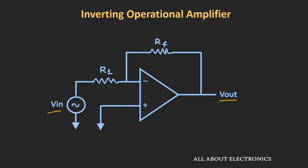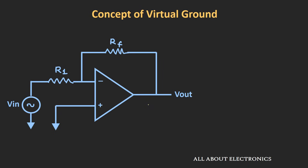Let us find how we can control the gain of the op-amp using feedback resistor RF and R1. Before we derive this expression, let us understand the concept of virtual ground in the op-amp. This concept is applicable when we are providing negative feedback. Let us say the open-loop gain is 10 to the power 6. We know that the output voltage Vout equals A times the differential input voltage between the inverting and non-inverting terminals. Assuming negative feedback controls the output so it remains below the saturation voltage — that is, the op-amp is operating in a linear region.